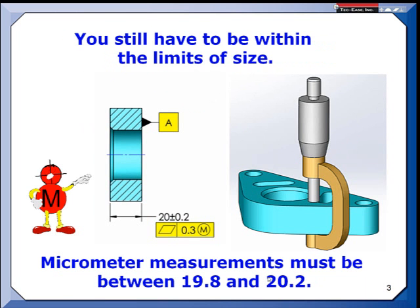You still must meet size, however. But size is only checked now with a two-point check, like a micrometer measurement. So I just have to verify when I use micrometers that it falls between 19.8 and 20.2 for point-to-point size. But then it could be out of flat more to make it act larger.